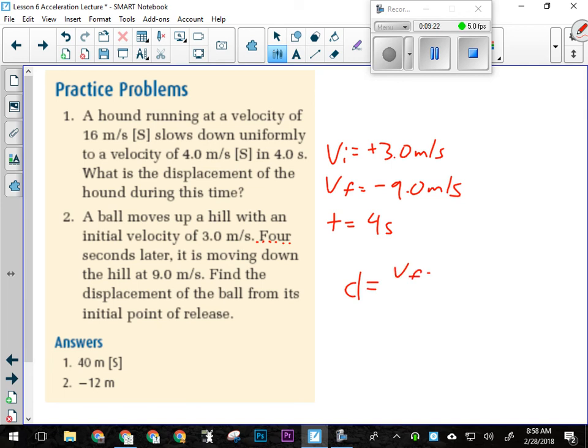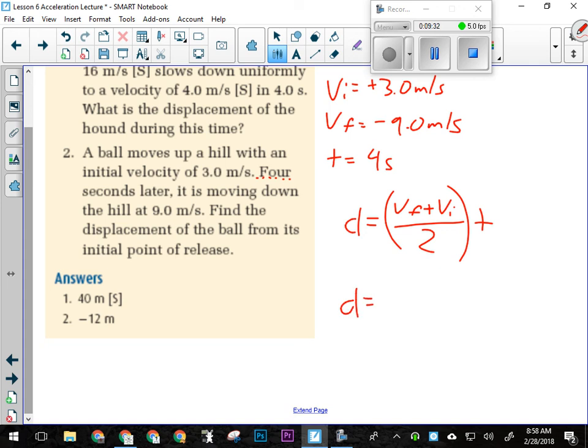Once again, we don't have to manipulate for this one. It's already set up to calculate what we need. The big trick in this one is remembering to make VF negative. So when I plug in my numbers, I'm going to have D equals negative 9 plus 3 over 2 times 4 seconds. So, negative 9 plus 3 is negative 6. Negative 6 over 2 is negative 3. Negative 3 times 4 is negative 12 meters. And I can't leave it like that. I have to write 12 meters down the hill. Because that's what the question gave me. It was up a ramp or something, up a hill. So, downhill.